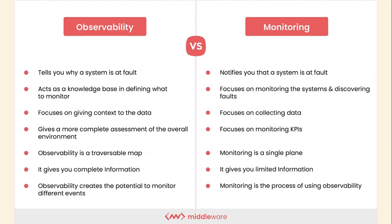Now let's see the difference between observability and monitoring. Observability tells you what in a system is at fault and why, whereas monitoring notifies you that the system is at fault. Observability acts as a knowledge base in defining what to monitor, while monitoring focuses on collecting data and monitoring KPIs. Observability gives context to the data and provides a more complete assessment of the overall environment. Observability is like a traversable map giving complete information, whereas monitoring is a single plane giving limited information.